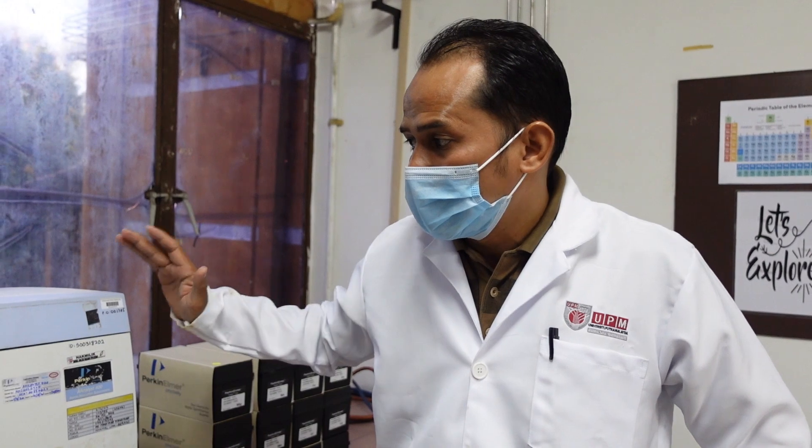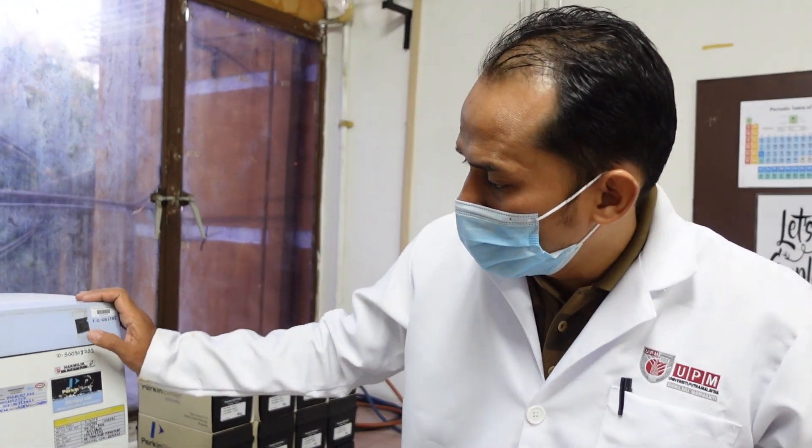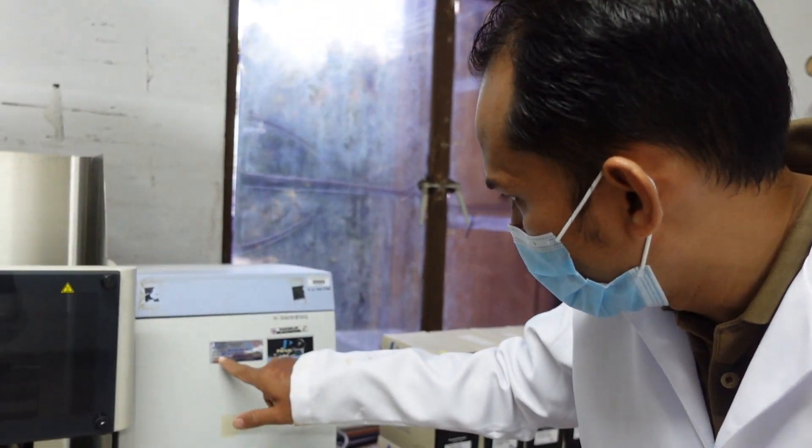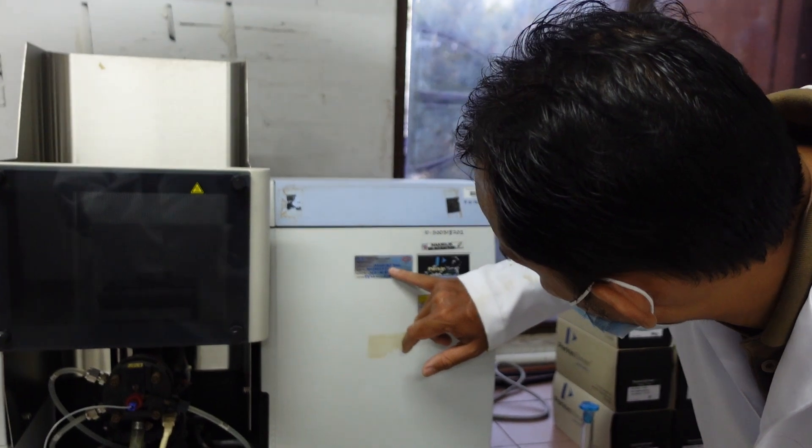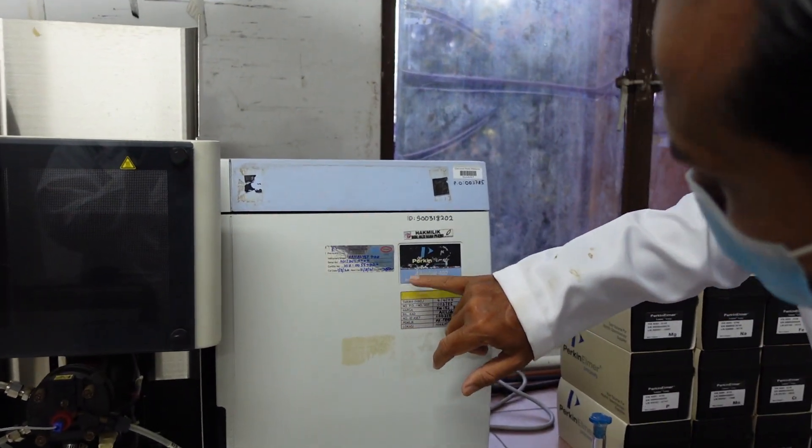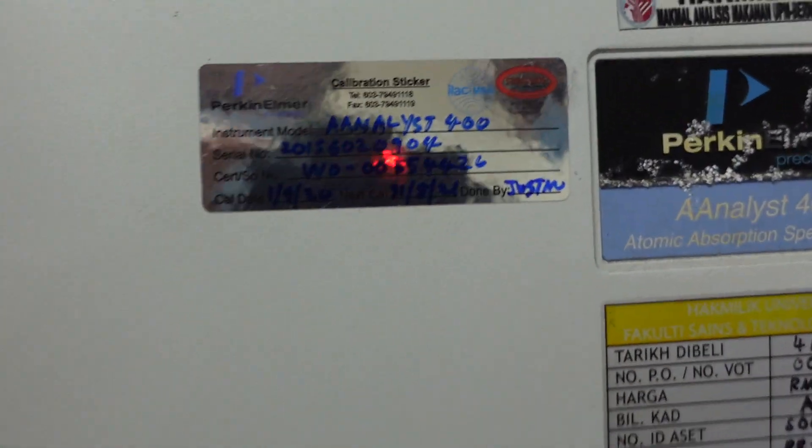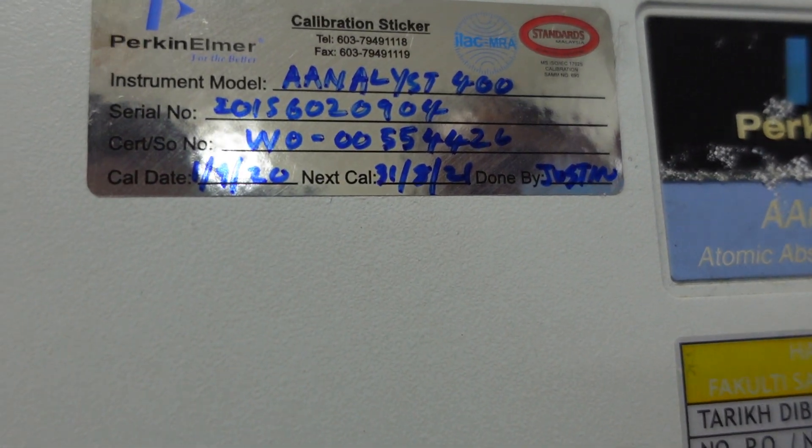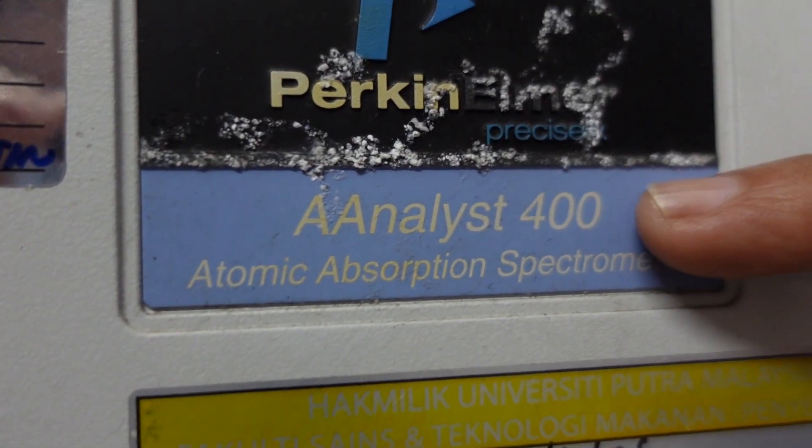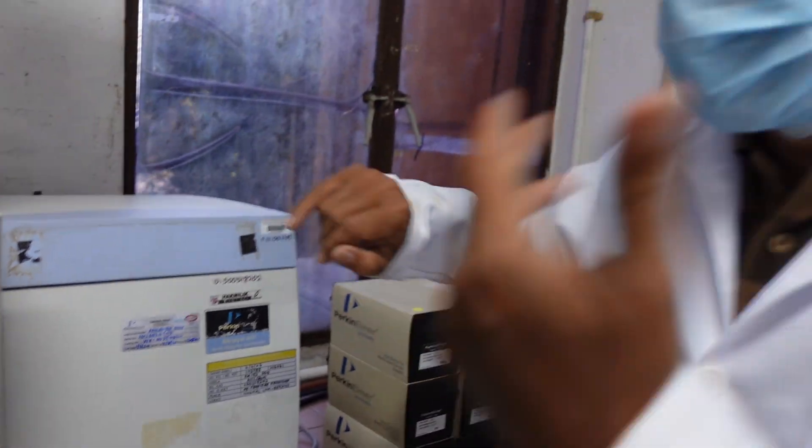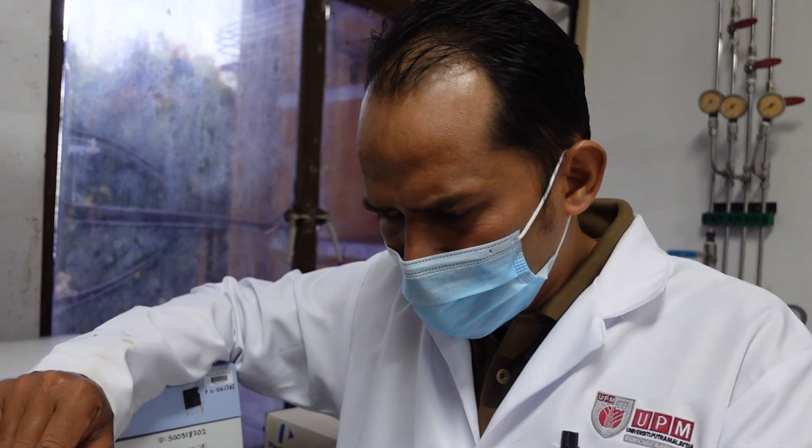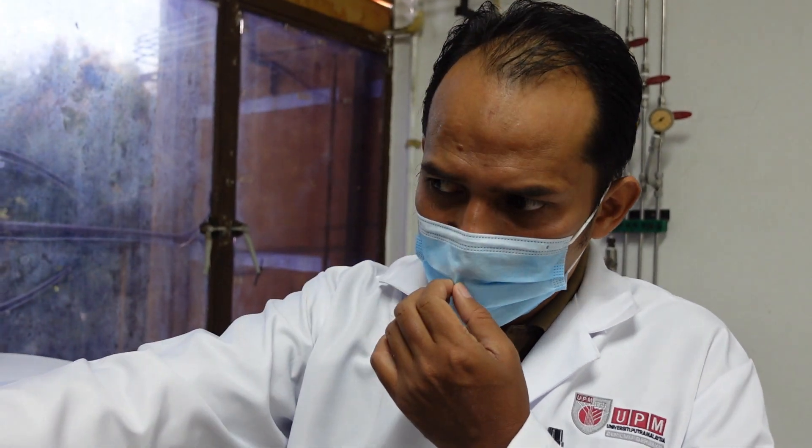Let me show you the AAS that we have in Food Science. We are going to use AAS from PerkinElmer. The model is Analyst 400. There are many models. Each model will come with slightly different setup and the interface will be different. If you have a different model AAS, you might want to go to the manual to see how it's run. But the basic is the same.